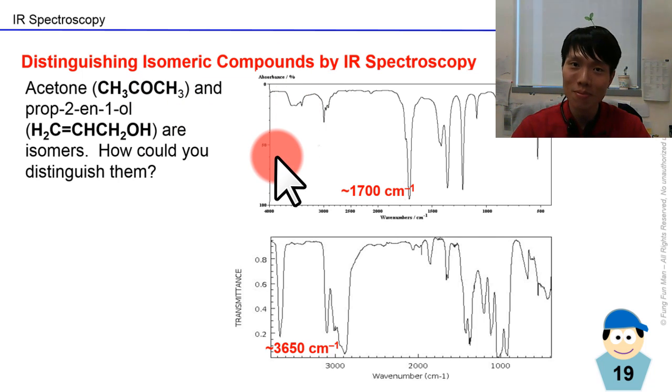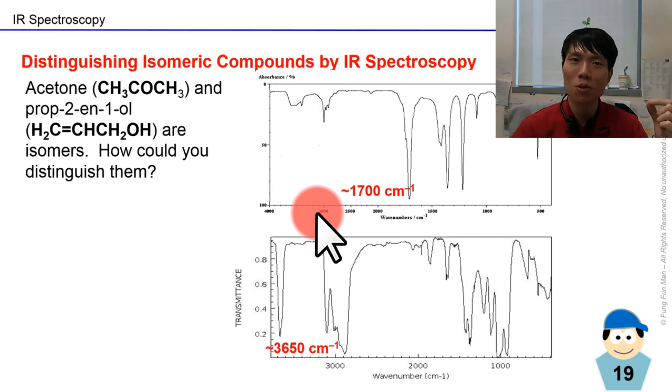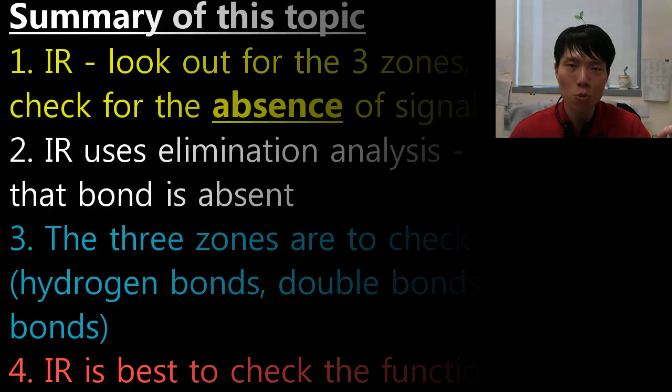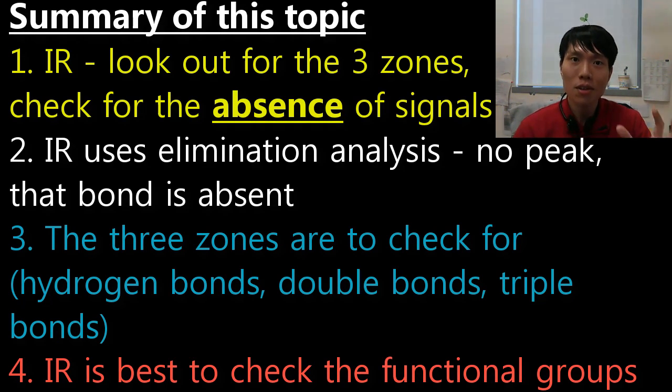So to summarize, infrared spectroscopy is very good to detect the functional group in the molecule. Cheers.